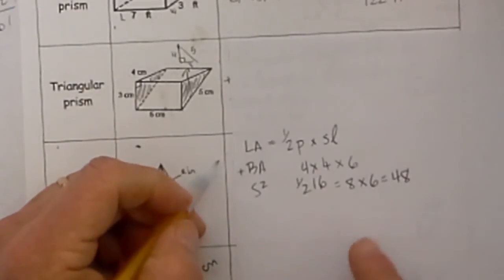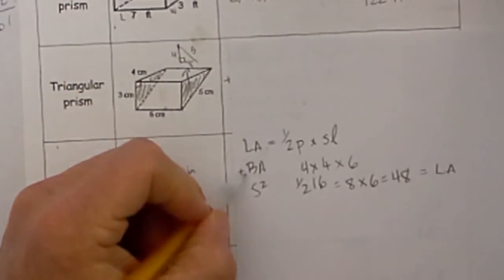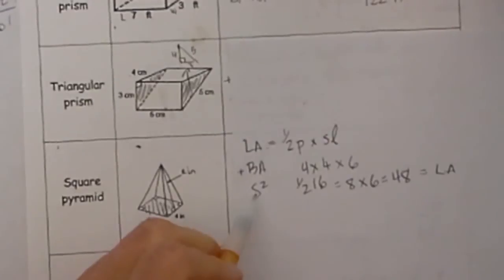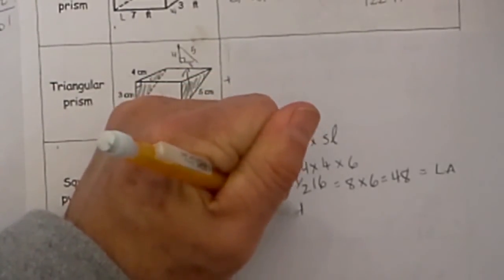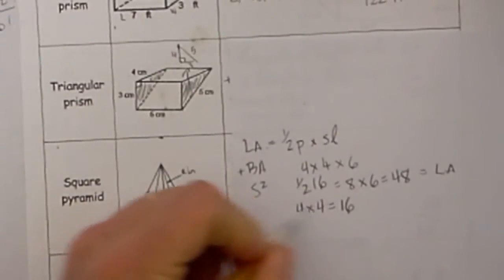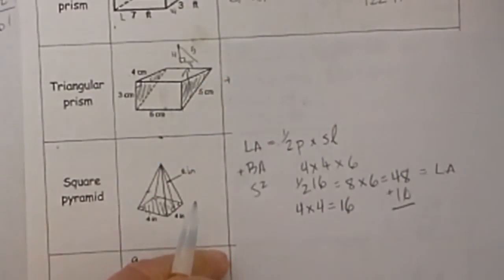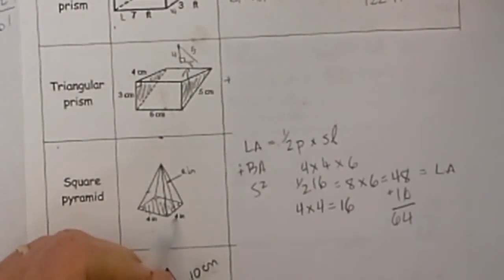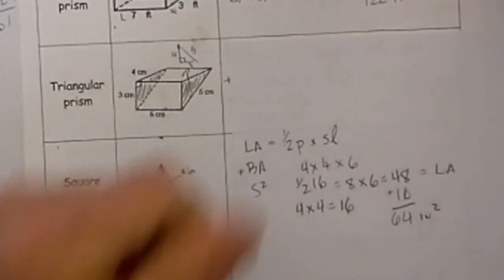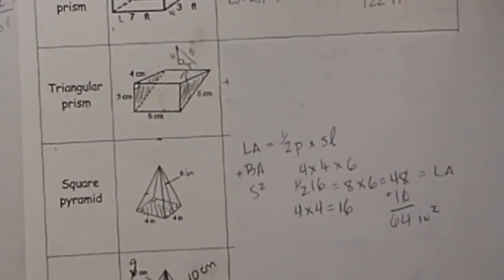That gives us our lateral area of 48. Now we calculate the base area: since it's a square, it's side squared, so 4 squared equals 16. Adding them together: 48+16=64 inches squared, because surface area is always expressed in square units. Hope this helps — MooMooMath uploads a new math video every day.